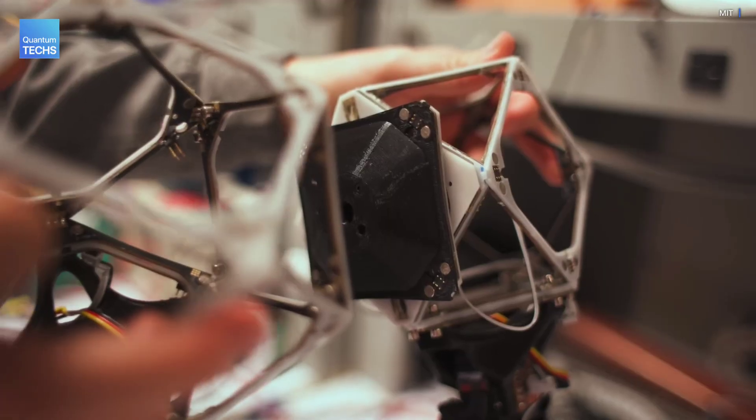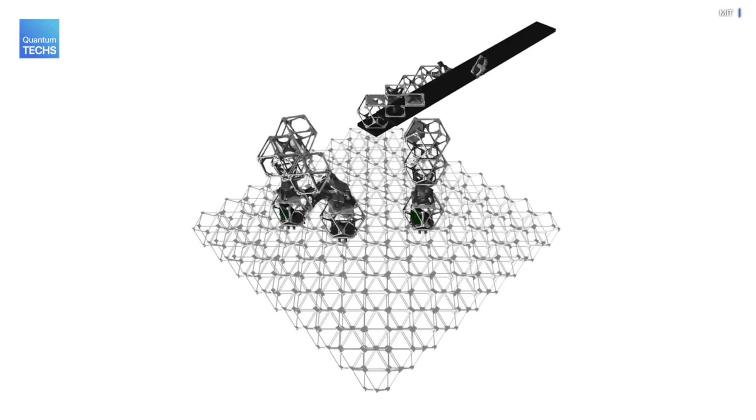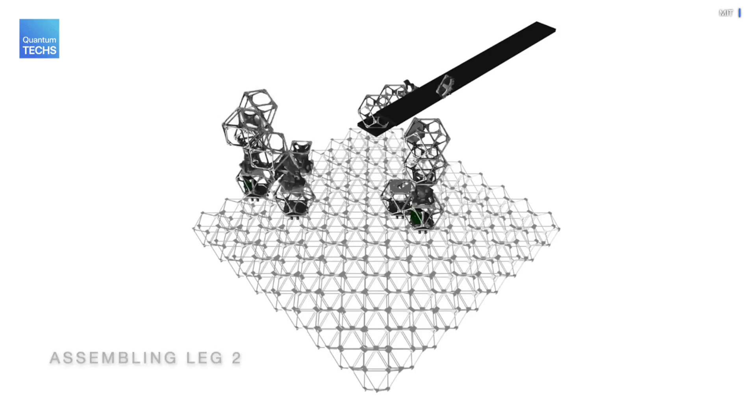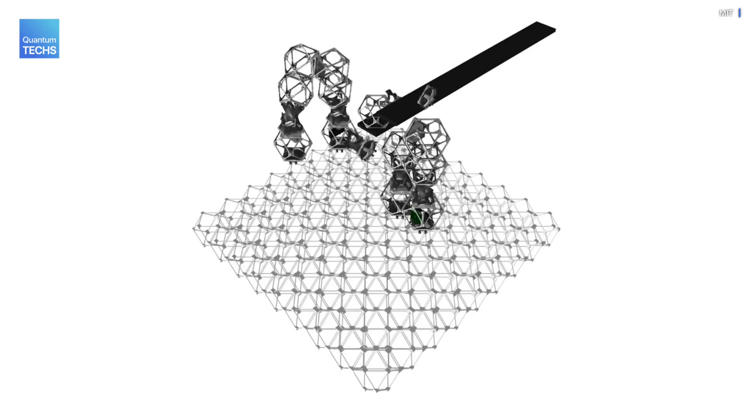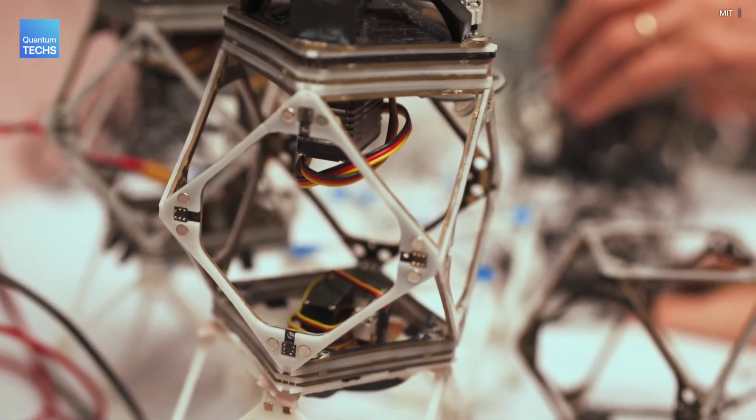The subunit of the robot is called a voxel and it is capable of carrying power and data. The voxels make up both the robot itself and the components of the thing being built, allowing them to work together on larger structures.